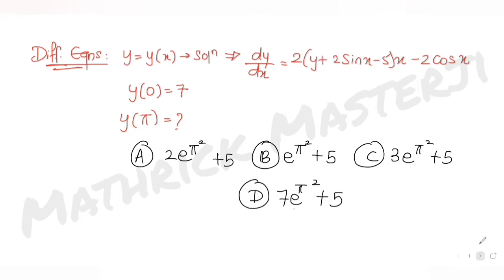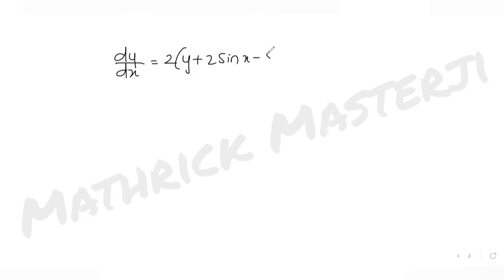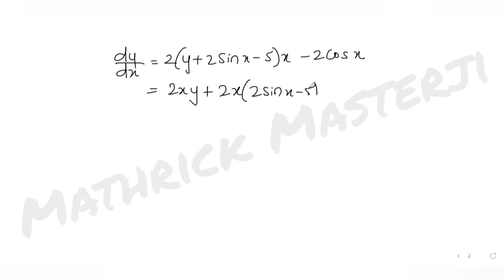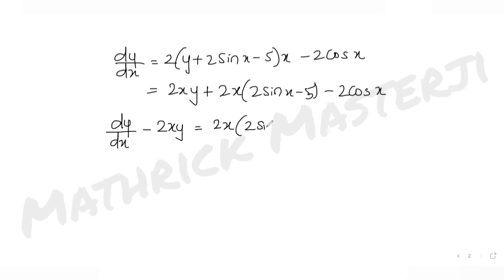Let's see the solution. I have the differential equation: dy/dx = 2y + 2sin(x) − 5 times x, minus 2cos(x). If I expand, I get 2xy + 2x·2sin(x) − 2cos(x). Taking the 2xy term to the left side gives: dy/dx − 2xy = 2x(2sin(x) − 5) − 2cos(x).